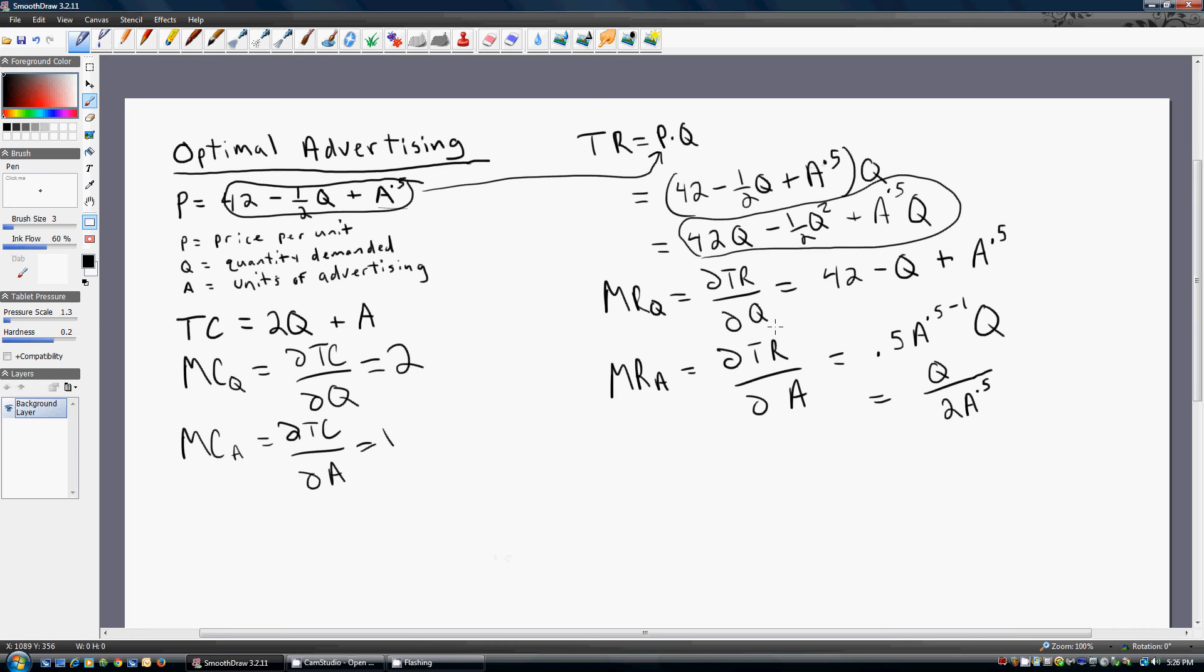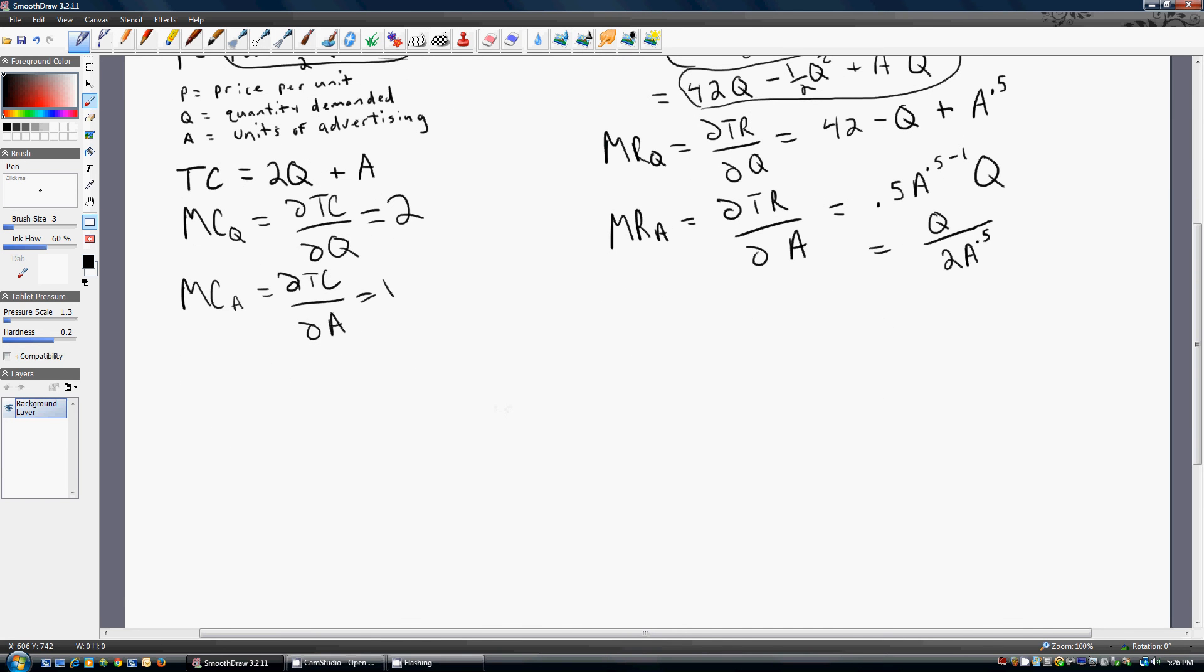Okay, so we've got two marginal revenues, two marginal costs. We're just going to set them equal to one another. So let's set marginal revenue of output equal to the marginal cost of output.